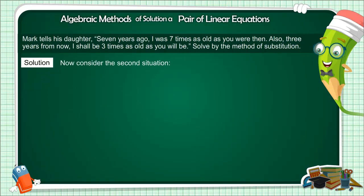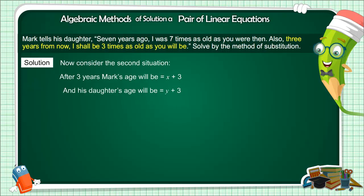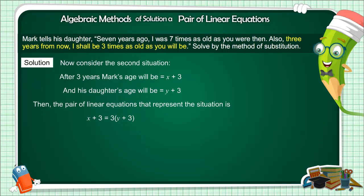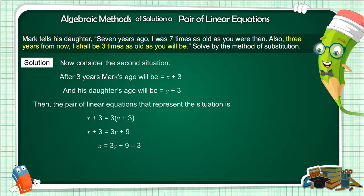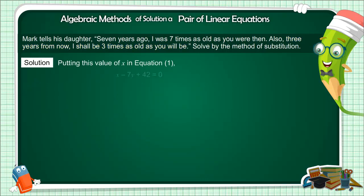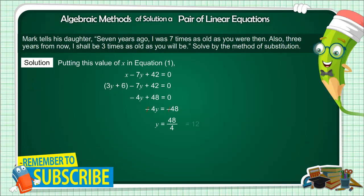For the second equation: after 3 years, Amar's age will be x plus 3 and his daughter's will be y plus 3. So x plus 3 equals 3(y plus 3), which gives x plus 3 equals 3y plus 9, meaning x equals 3y plus 6. Substituting this value of x into the first equation: (3y plus 6) minus 7y plus 42 equals 0, giving minus 4y plus 48 equals 0. Therefore minus 4y equals minus 48, and y equals 48 by 4, which is 12.